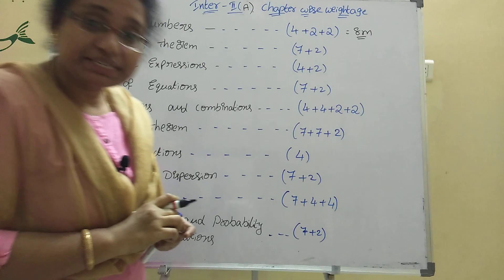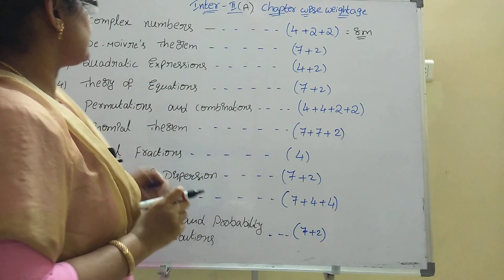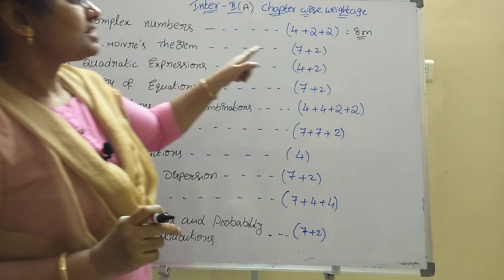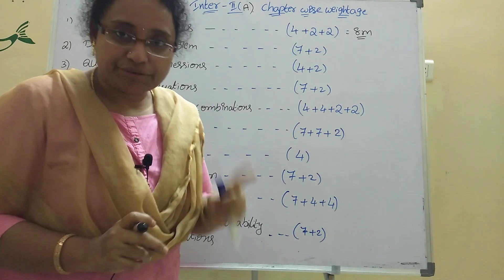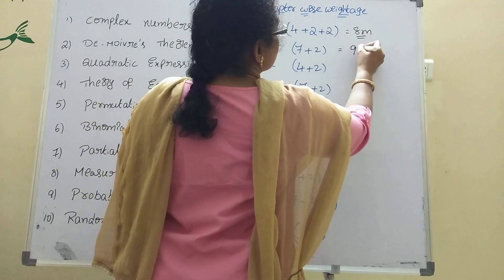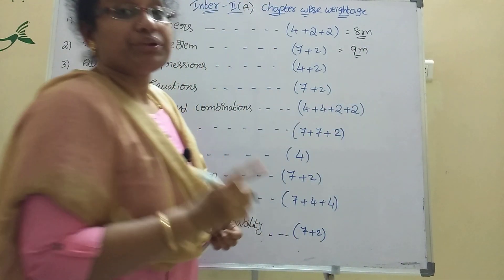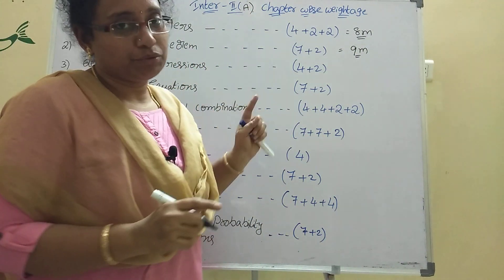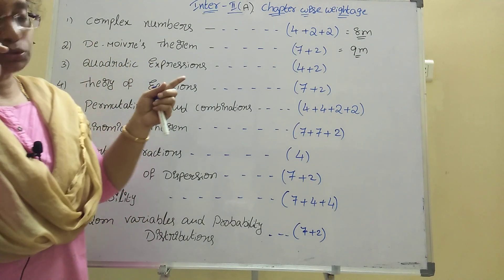De Moivre's theorem: 7 plus 2 is 9 marks. One 7-mark question, every 18th bit will be De Moivre's theorem only.